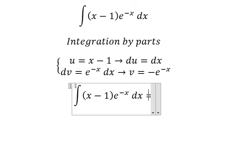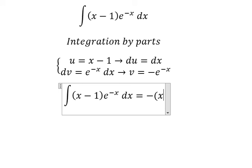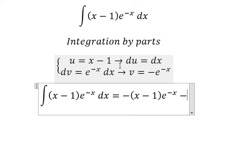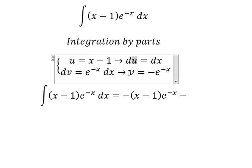So we have u multiplied by v minus the integral of v du.